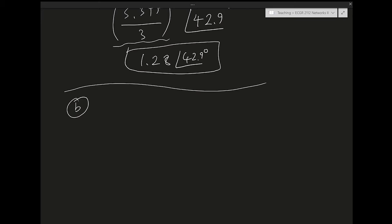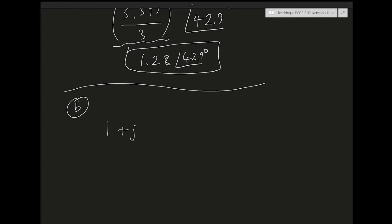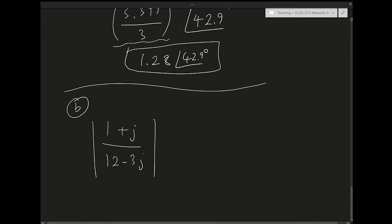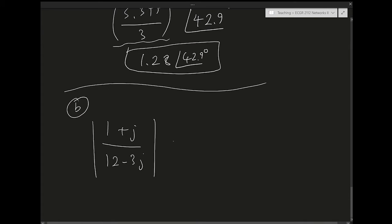Now let's go to part B of the question. Part B states: find the magnitude of (1 + j)/(12 − 3j) + 5∠45°. So we're taking the magnitude of this entire expression, converting it into a real number.